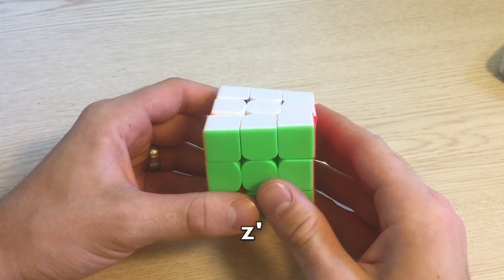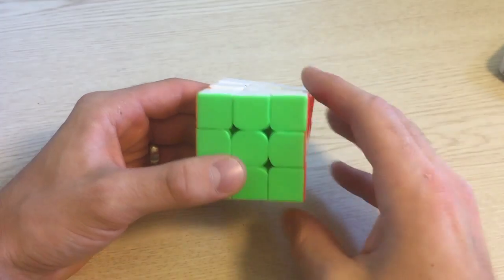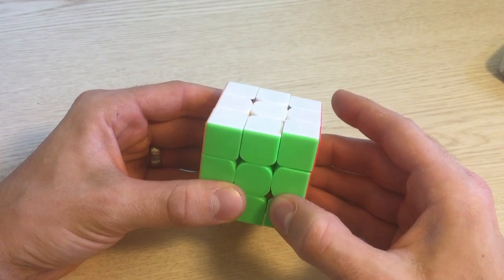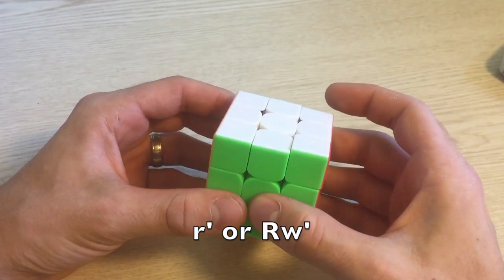Finally there is notation to move more than one layer at once. This is either noted by a lowercase letter or with a W following the letter. For example, R and R' is this, while a lowercase R and R' or Rw and Rw' is this.